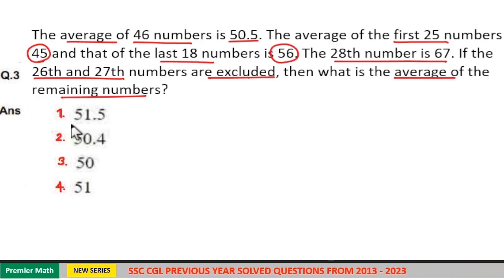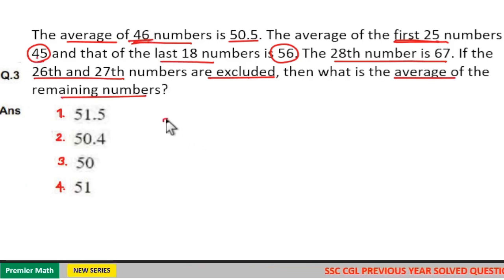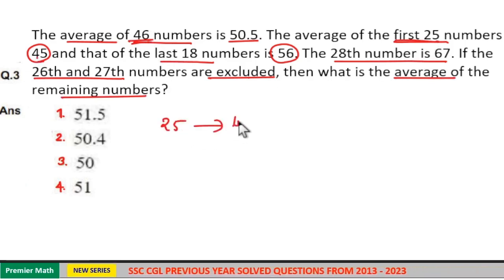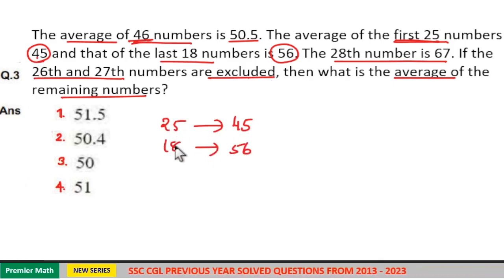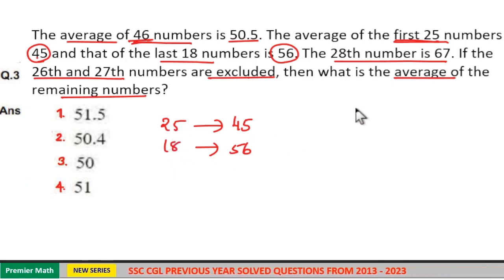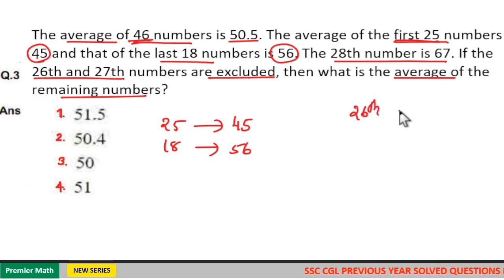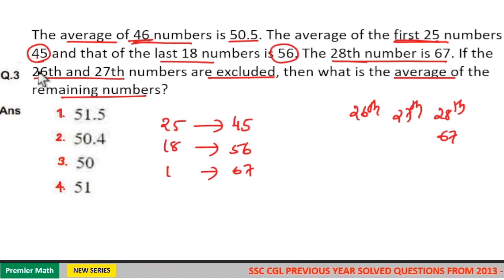Total numbers are 46. The first 25 numbers average 45 and the last 18 numbers average 56, so 25 plus 18 is 43, leaving three remaining numbers. After the 25th, the remaining are the 26th, 27th, and 28th numbers. The 28th number is 67, and the 26th and 27th numbers are excluded.